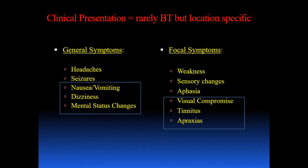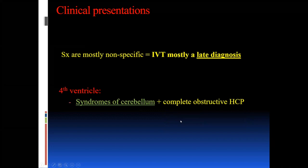These patients often present with vague symptoms — not tumor specific but location specific. In the posterior fossa, most patients present with a mixture of nausea, vomiting, dizziness, mental status change from hydrocephalus, occasionally combined with visual compromise, tinnitus, and apraxia. Often patients come with rather little symptoms and rather large tumors. Symptoms are non-specific, making these tumors a late diagnosis. You often find syndrome of the fourth ventricle — cerebellar symptoms combined with obstructive hydrocephalus.